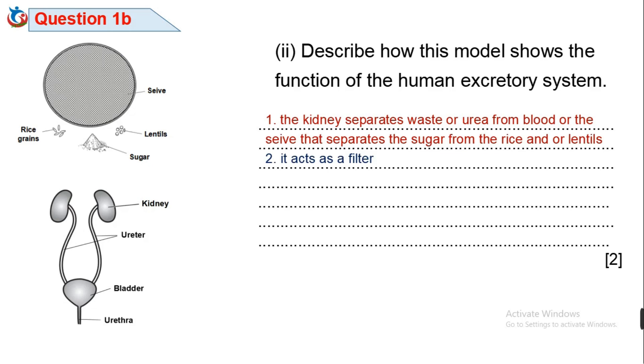2. This model acts as a filter. 3. Large particles do not pass through. For example the blood cells, the rice or lentils. Just as blood cells don't pass through the kidney. 4. Small particles do pass through, e.g. urea. Just as sugar in the model experiment. So any two of these responses will give you your two marks.